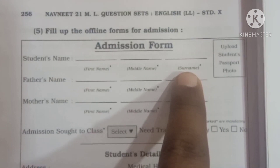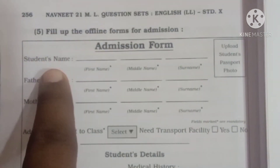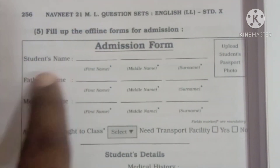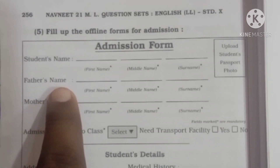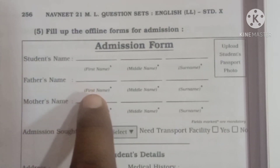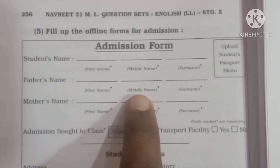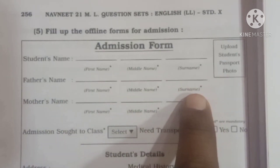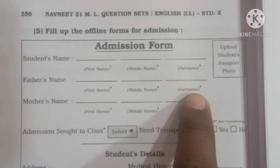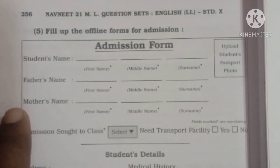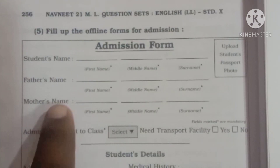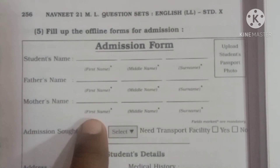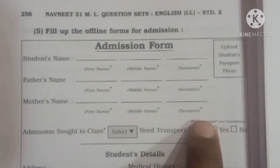Itay lakshat — student's name. Second, father's name. Father's name ahi aaplel kas liya chai? First name, middle name, surname. Then mother's name: first name, middle name, surname.